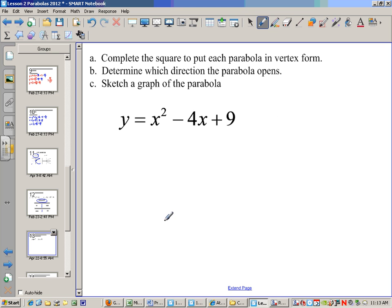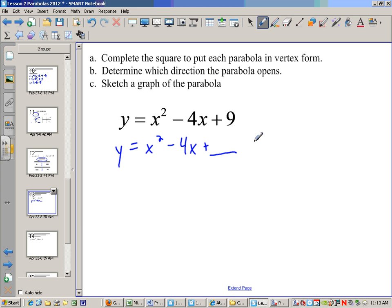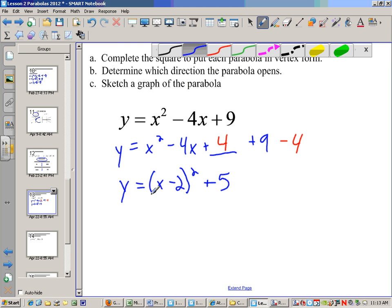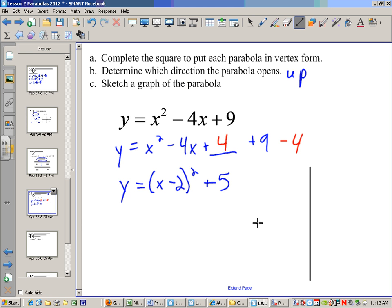Here we're going to complete the square, put the parabola into vertex form, determine which way the parabola opens, and then do a quick sketch. The first thing is put it into vertex form. Here I'll have to add 4, so I have to subtract 4. So y equals x minus 2 squared plus 5. If I look at this, my a is positive, it has y equals, so it opens up. My center is at 2, 5, and it opens up. So it'll look something like that.